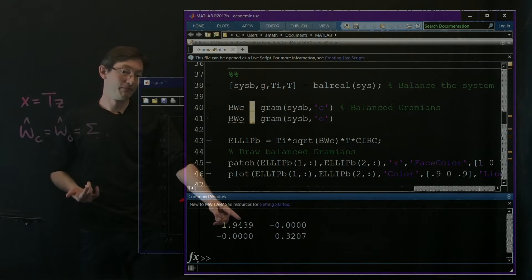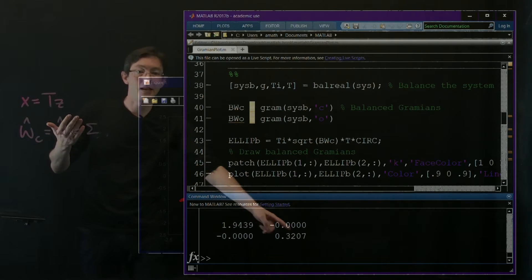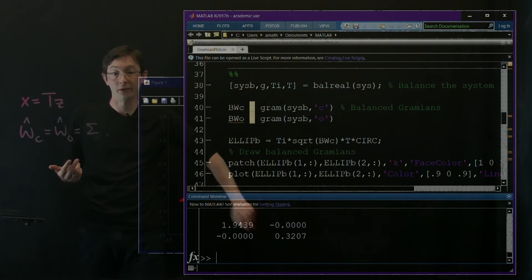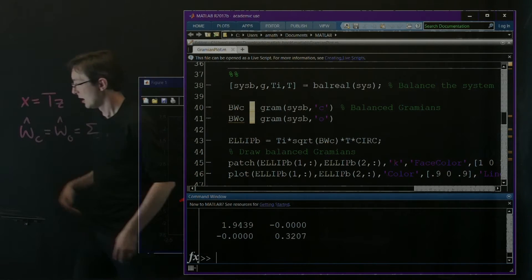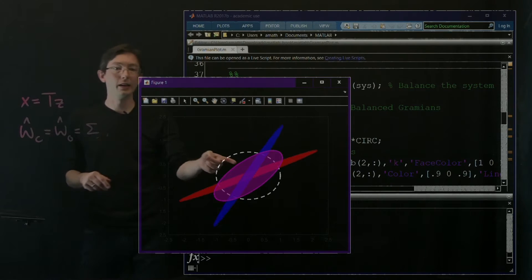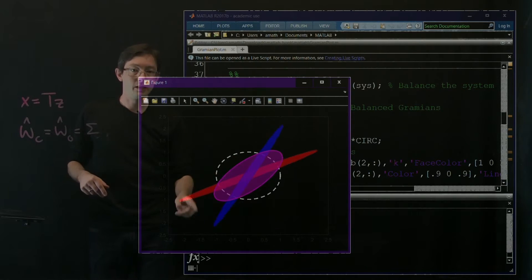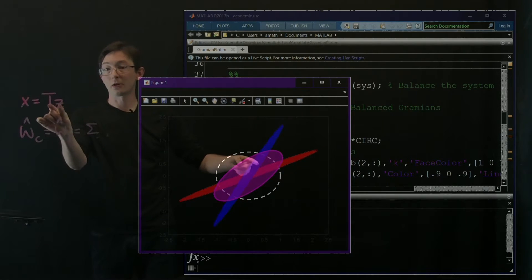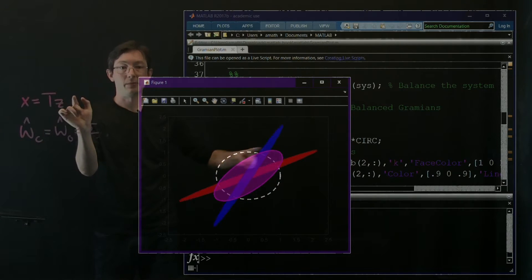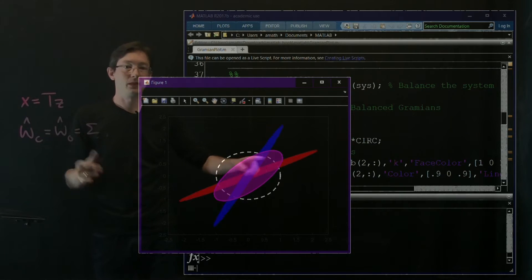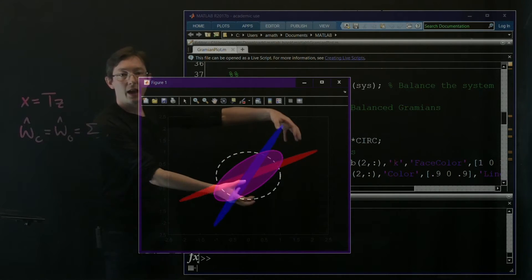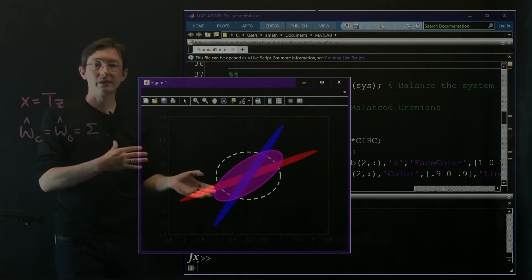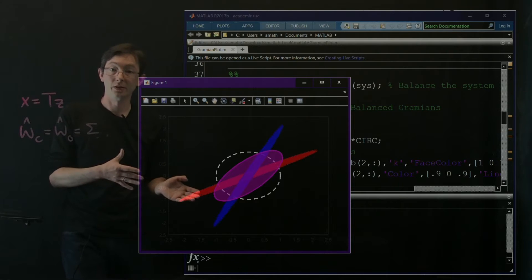So this one is more than five or six times more important than this one. So if I wanted to only pick one state, I'd pick the Z1 coordinate and I'd throw away the Z2 coordinate. Then remember I plotted my original observability and controllability Gramians in blue and red. Now what I'm doing is I'm plotting in these balanced coordinates. So I map into Z coordinates. I plot my ellipse and then I map out to show it in the X coordinates. And I get this nice purple ellipsoid, which balances the trade-offs between good observability and good controllability.